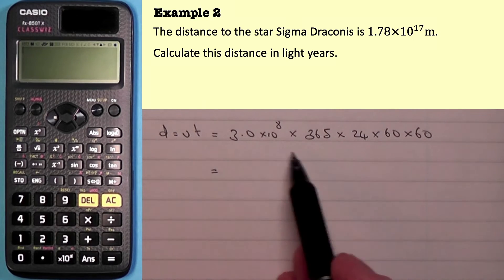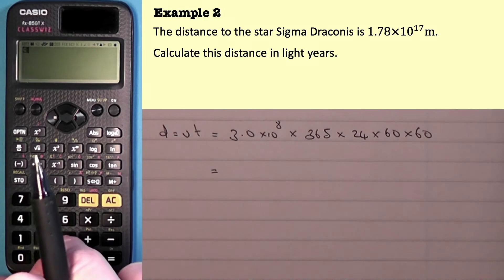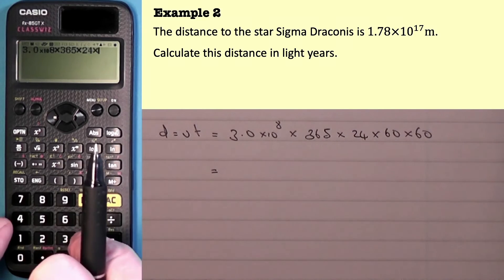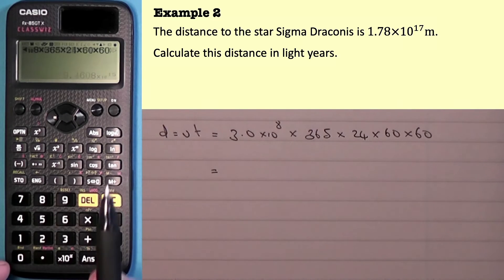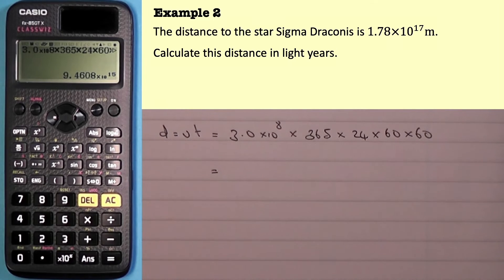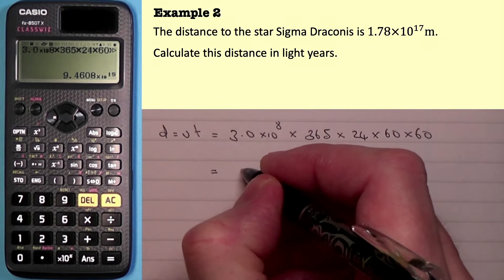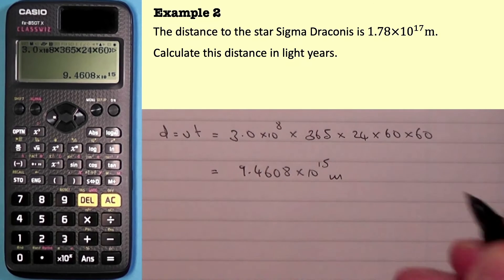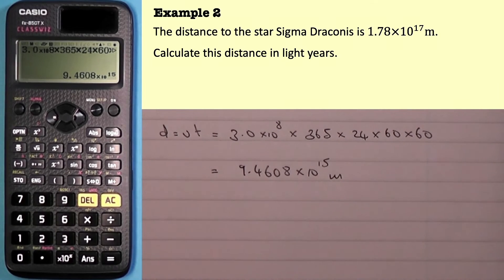This is the most important part — remembering how to calculate a light year. So 3.0 times 10 to the power of 8, times 365 times 24 times 60 times 60, gives us 9.4608 times 10 to the power of 15 meters. I'm not going to round this value because it's not the final answer. To work out how many light years we have, I need to divide the distance from the question — 1.78 times 10 to the power of 17 — by this number.